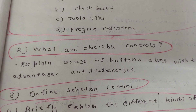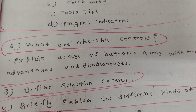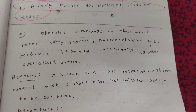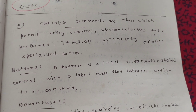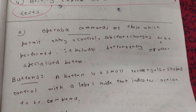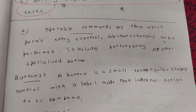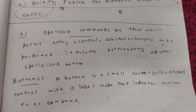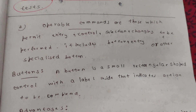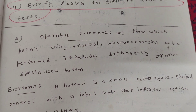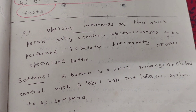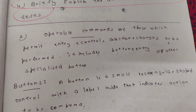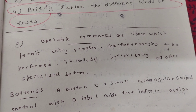Module 5 question: what are operable commands? Operable commands are those which permit entry, control, selection, and changing to be performed. It includes buttons, entry fields, or other specialized buttons. So operable commands are basically a task model for permission — trying the user, for example.